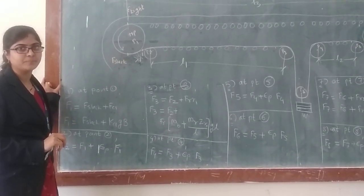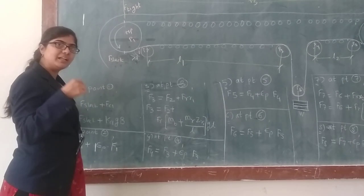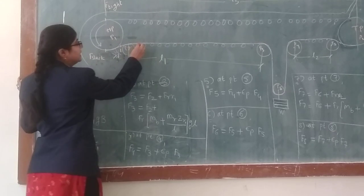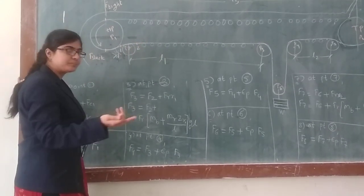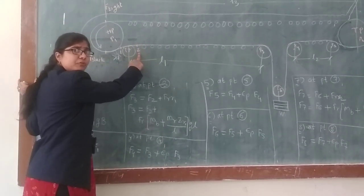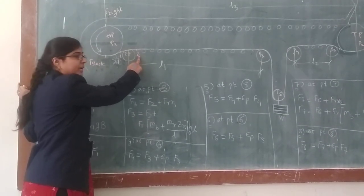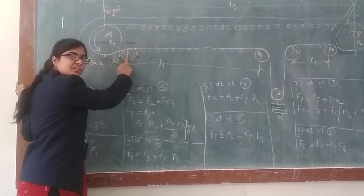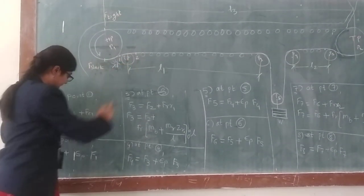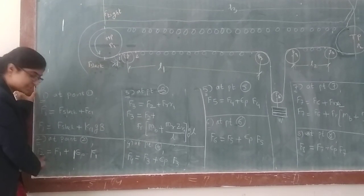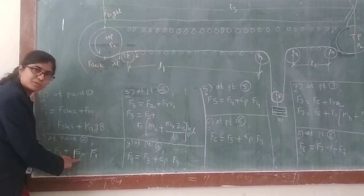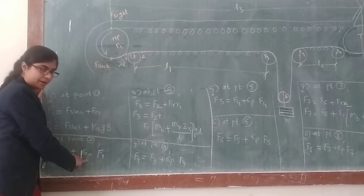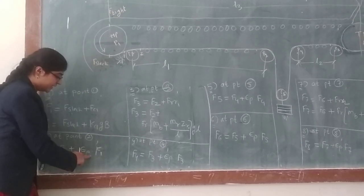Next, you will take point two. Where do you take point two? Obviously, after the snub pulley. F2 will be the frictional force at point two. F2 is equal to F1 plus the frictional resistance offered due to the snub pulley. So F2 is equal to F1 plus epsilon-p into F1, where epsilon-p is the snub factor which depends on the lap angle theta.